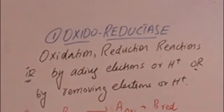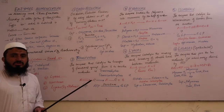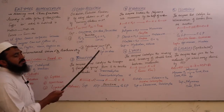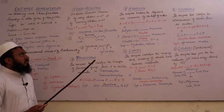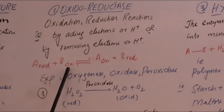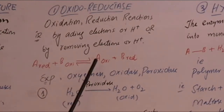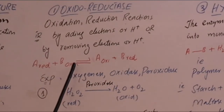The first group is oxidoreductases — enzymes involved in oxidation-reduction reactions. Oxidation-reduction reactions involve addition or removal of electrons or hydrogen ions. For example, a molecule in reduced form and another in oxidized form react: the reduced one becomes oxidized and the oxidized one becomes reduced. Most such reactions are reversible.